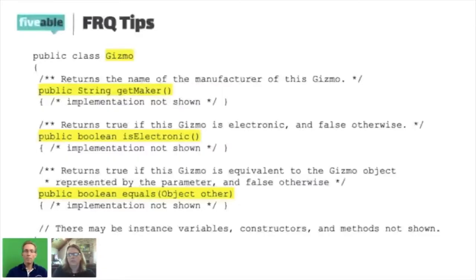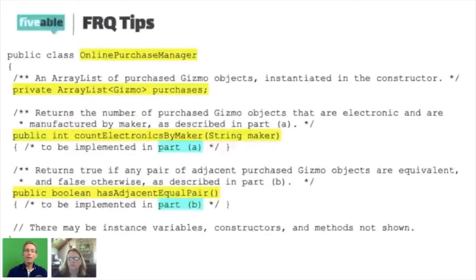When I move to the next slide, I could start reading the text, but if I jump straight to the code, I know not only what this class is — an OnlinePurchaseManager, which keeps track of online purchases — because that's the name of the class and it should tell you what it is. Purchases is a variable, an instance field that I know I'm going to be using, otherwise they wouldn't have included it. And I know that instance field is an ArrayList of Gizmo references.